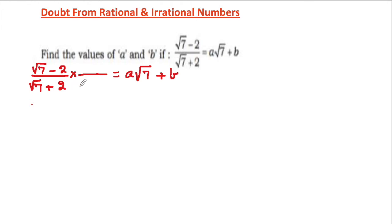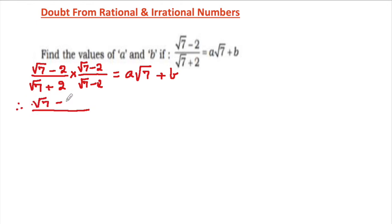If it is √7 plus 2 in the denominator, we will multiply by √7 minus 2, and in the numerator also we will write √7 minus 2. As a result, in the numerator we will have √7 minus 2 whole squared, and in the denominator we will see (a+b)(a-b), which gives us a squared minus b squared.